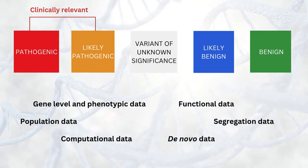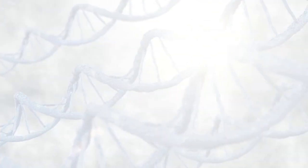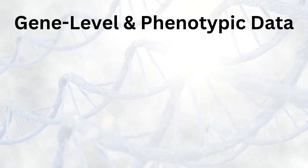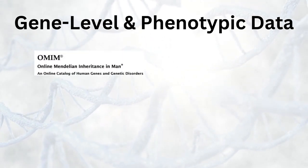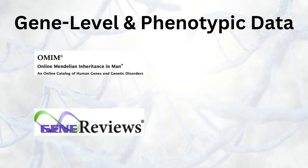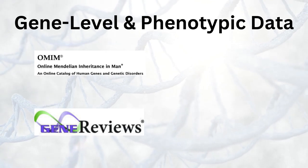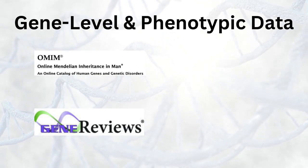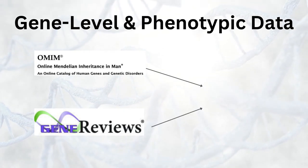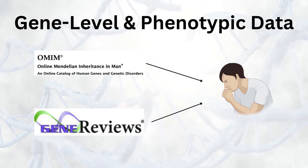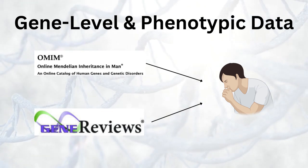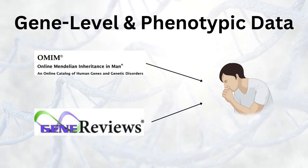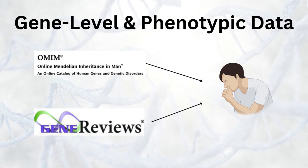Let's have a brief look at what some of these mean. First, gene level and phenotypic data. This includes reviewing the literature and resources like OMIM and gene reviews to gain insights into the gene's function, associated diseases, and any known pathogenic variants. The patient's phenotype is then compared with established disease presentations, helping to determine whether the variant of interest might be contributing to the observed clinical features.